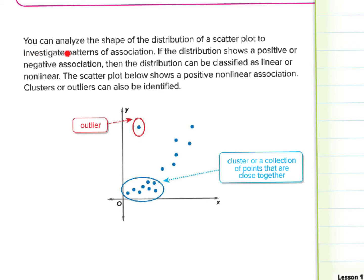Let's take a look at this example. You can analyze the shape of the distribution of a scatter plot to investigate patterns of association. If the distribution shows a positive or negative association, then the distribution can be classified as linear or non-linear. The scatter plot below shows a positive non-linear association. Clusters or outliers can also be identified. Let's just see here. We clearly have a cluster. And we see that we have a curved line. So there is a positive non-linear association. We do have a cluster. More data down here. And then we have an outlier. A fluke. Something that does not go with the trend.